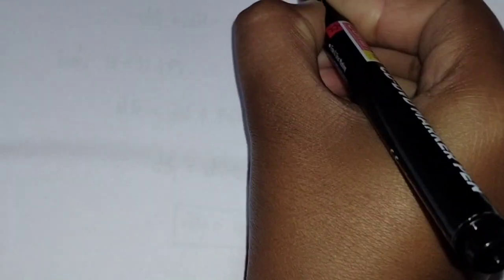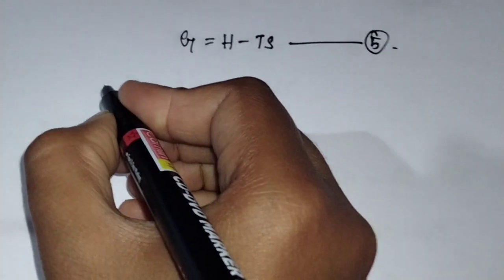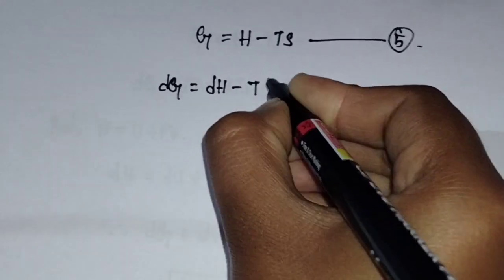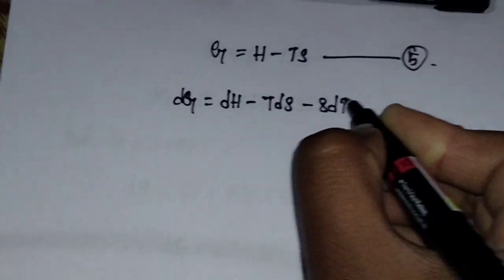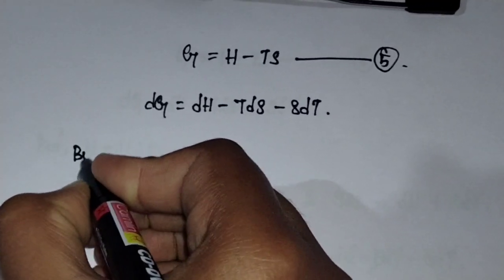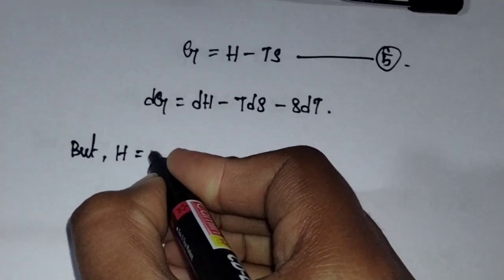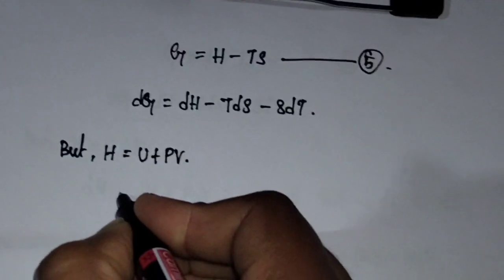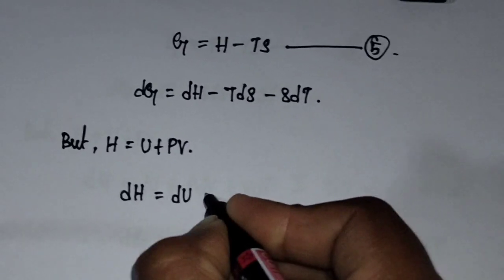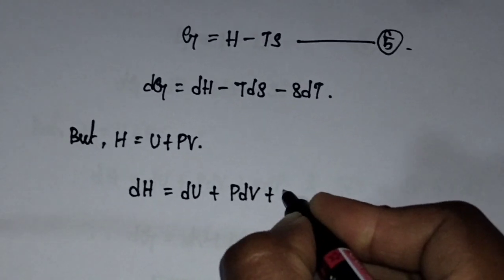We know that G equals H minus TS. Take this as equation number five. Differentiating equation five we get dG equals dH minus T·dS minus S·dT. Also, H equals U plus PV, so differentiating this gives dH equals dU plus P·dV plus V·dP.